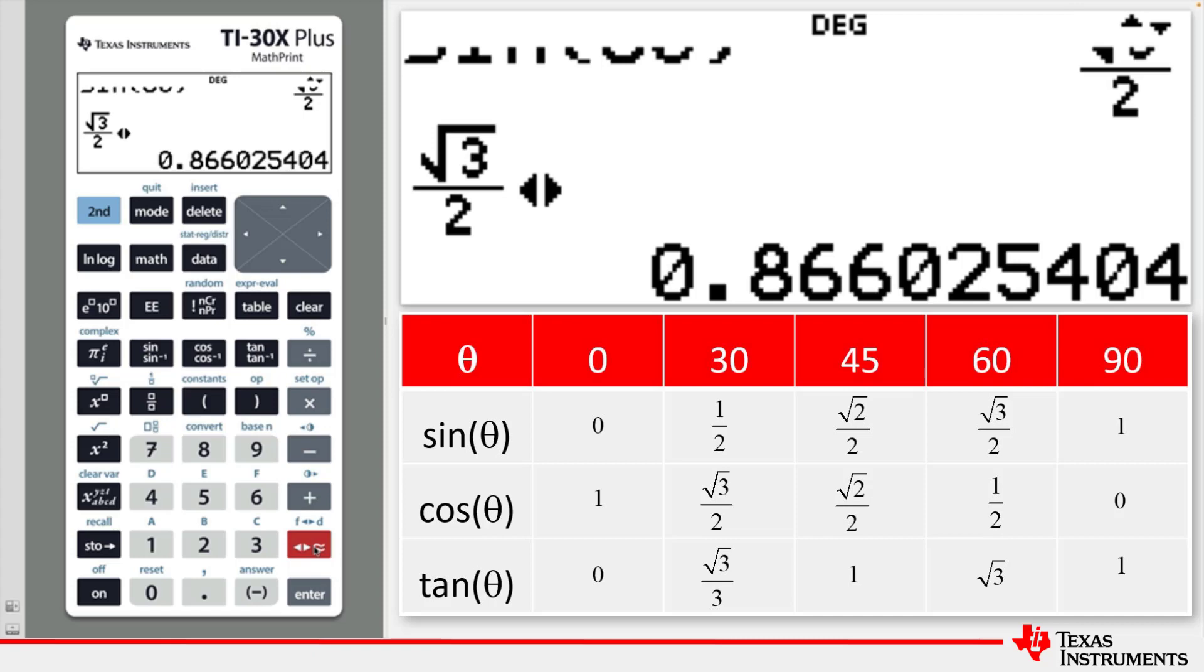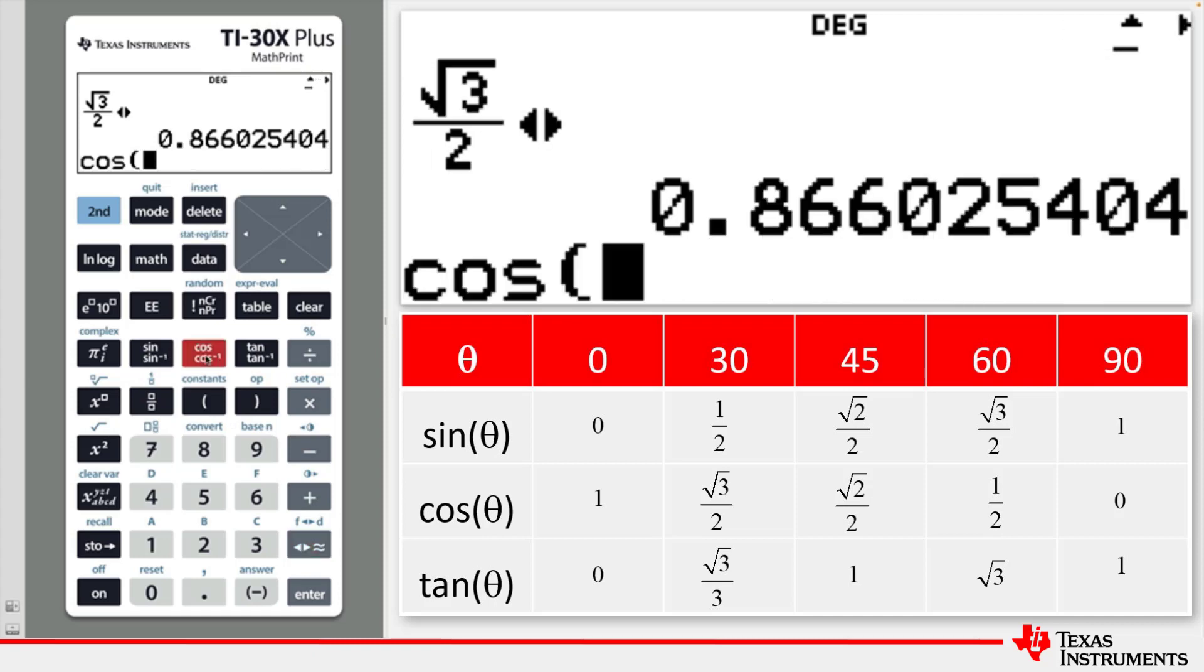As a second example in degree mode, let's find the inverse cosine of the ratio 1 over square root of 2. So to select that option, press cos and then again to change the command to the inverse cos.